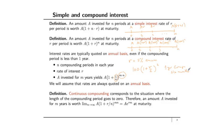If you do the same thing — compounding every 6 months — but invest for 2 years instead, the interest rate per period is still r/2. However, in 2 years there are 4 compounding periods. So the amount of money you get back is (1 + r/2)^4. This is 2 years compounded every 6 months.